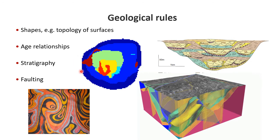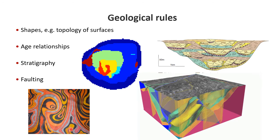Here we see a porphyry copper deposit—a horizontal slice showing intricate nesting of various lithologies, where one is older than another. If we want to model these lithologies, we have to account for their age relationships. We see that the pink is nested within the gray, and there's a special relationship between the black and the orange. When modeling these kinds of systems, we must account for nesting and age relationships.